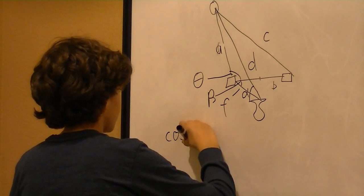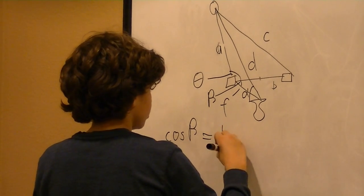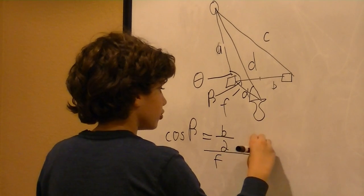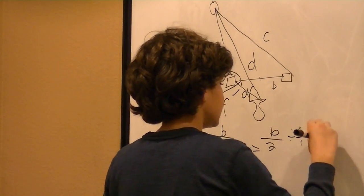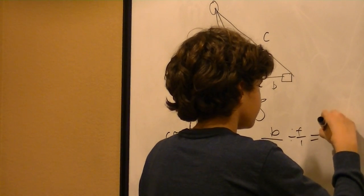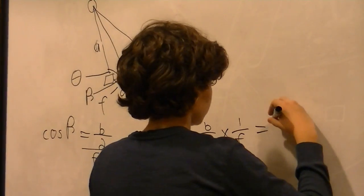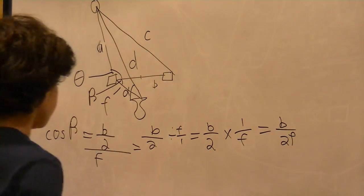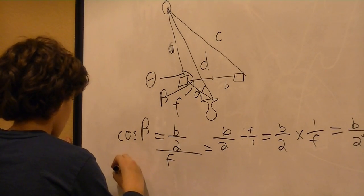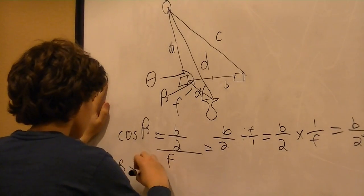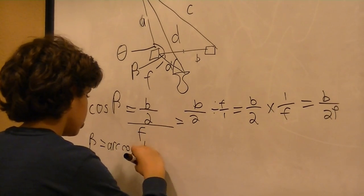Cosine of theta is equal to B divided by 2, divided by F, which is equal to B over 2 divided by F, which equals B over 2F. I'm going to solve for beta. Beta is equal to arc cosine of B over 2F.